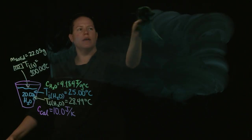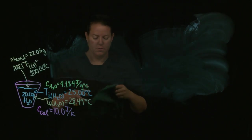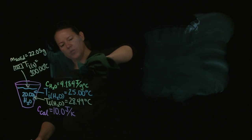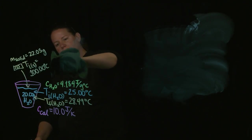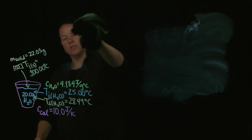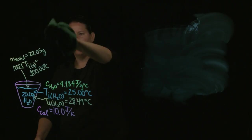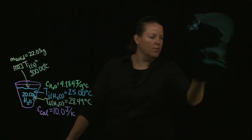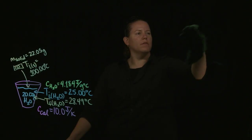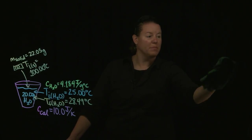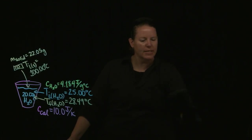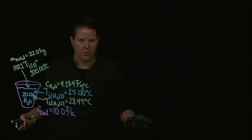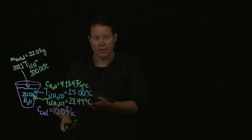If you add hot solid to room temperature water, the water should heat up and the solid should cool down, and they should meet somewhere in the middle. You add ice to a cup of water — the ice is cooler than the water — and the water cools down and the ice heats up and melts. It's the exact same thing but in a kind of opposite way. This is hot solid added to basically cool water; the solid cools down, the water heats up, they meet somewhere in the middle.